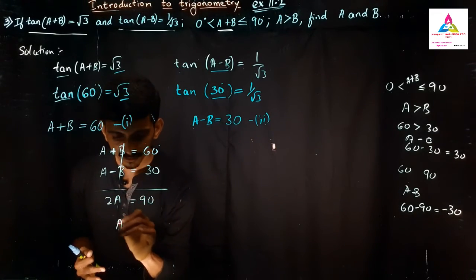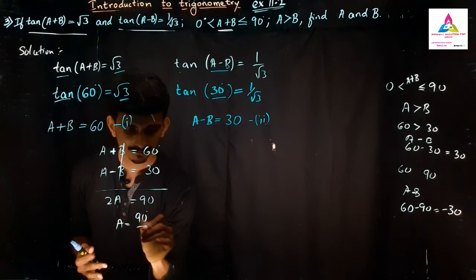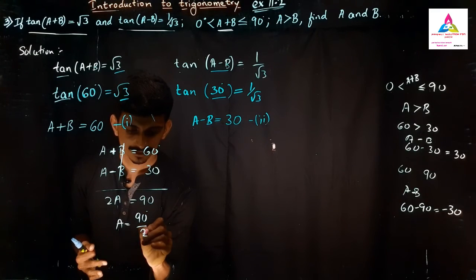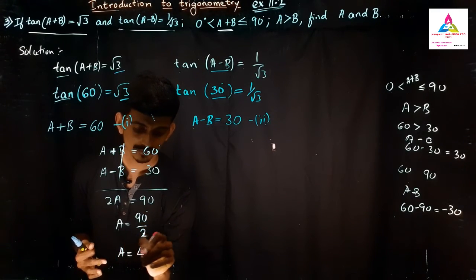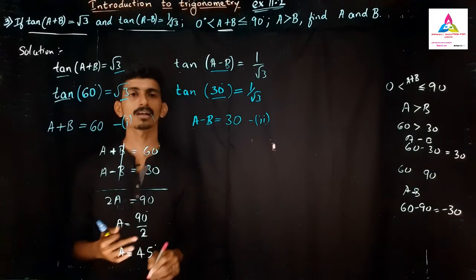So obviously the A value will become 90 degrees divided by 2. So obviously the answer will become A value is equal to 45 degrees. So we got that A value is 45.